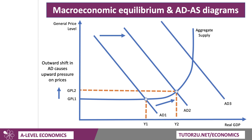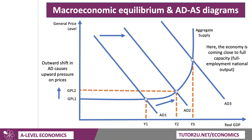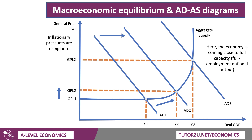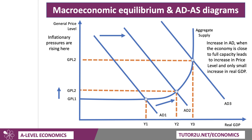Were there to be a further increase in aggregate demand to AD3, aggregate supply is becoming more inelastic. The economy is running up against supply bottlenecks or capacity constraints, and the level of supply is unsustainable at current price levels. National income goes up to Y3, but because the economy is becoming close to its full potential output, that increase in aggregate demand definitely causes an increase in inflationary pressure. This is a really good diagram to draw if you want to show the effect of an economic boom on the level of demand-pull inflation. An increase in aggregate demand when the economy is close to full capacity leads to an increase in the price level, but only a small increase in real GDP.